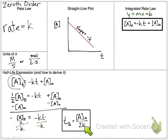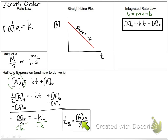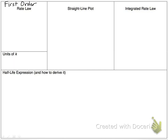One thing to point out is that the half-life for a zeroth order reaction does depend on the concentration. That's going to come up in our first order reaction as well. You'll also notice that this does not appear on the AP chemistry equations and constants sheet, so they probably won't have you do any calculations with it. Next, let's look at first order.